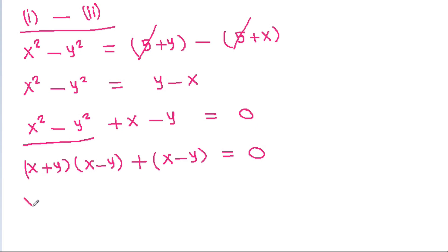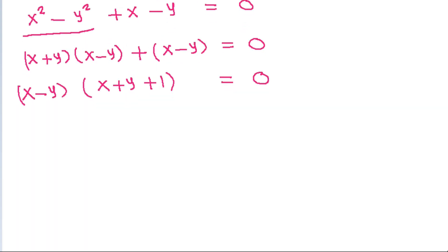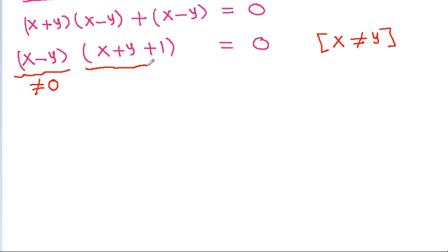If we take (x minus y) as common, then we will get (x minus y)(x plus y plus 1) is equal to 0. Since we have given that x is not equal to y, x minus y cannot be equal to 0. So x plus y plus 1 equals 0, which gives x plus y equal to minus 1.